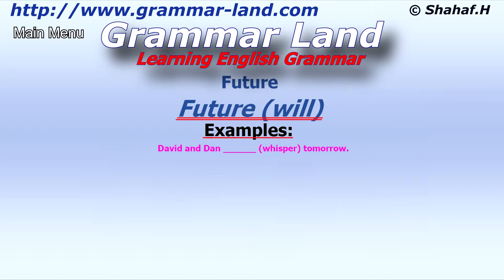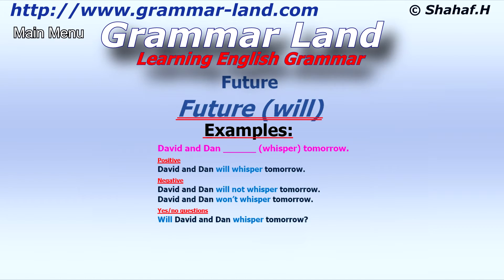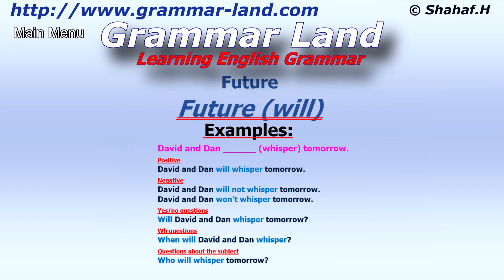Another example — 'David and Dan whisper tomorrow.' Positive: 'David and Dan will whisper tomorrow.' Negative: 'David and Dan will not whisper tomorrow,' or 'David and Dan won't whisper tomorrow.' Yes/no question: 'Will David and Dan whisper tomorrow?' WH question: 'When will David and Dan whisper?' Question about the subject: 'Who will whisper tomorrow?'